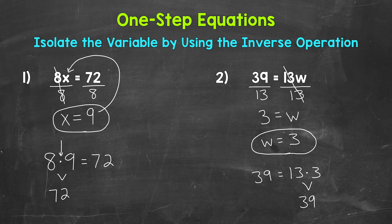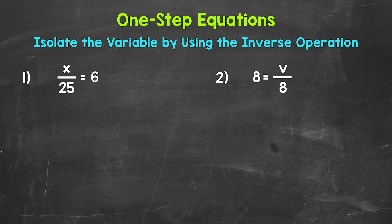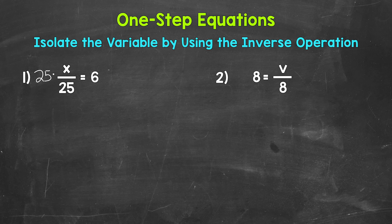So there's how we solve one-step multiplication equations. Let's move on to division. Here are our examples of one-step division equations. Let's jump into number 1 where we have x divided by 25 equals 6. Now we need to isolate that variable of x. We need to figure out what x equals. Since x is being divided by 25, we need to undo that division by using the inverse operation, so the opposite operation. The opposite of division is multiplication. So let's multiply the left side of the equation by 25. Now whatever we do to one side of the equation, we must do to the other in order to keep it balanced and equal. So let's multiply the right side by 25 as well.